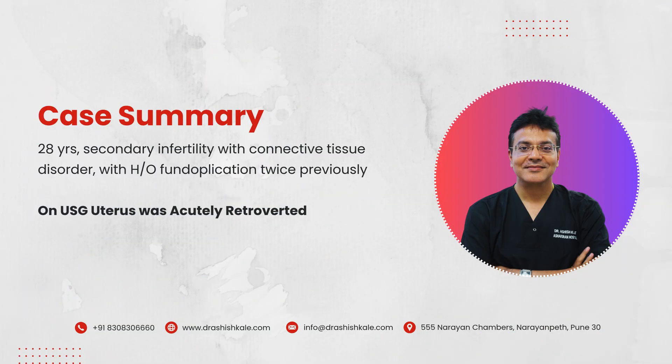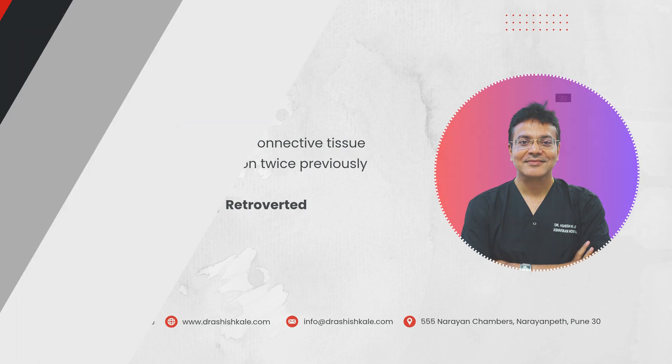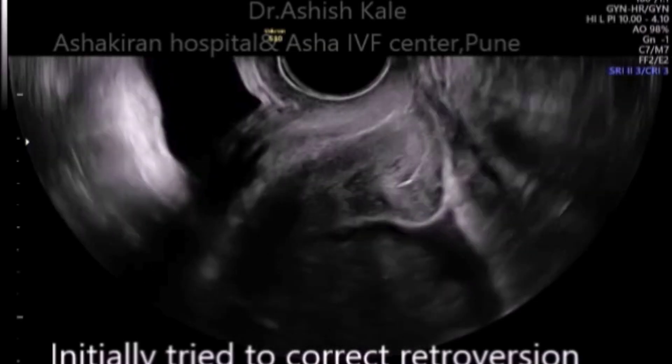Hello friends, today we are going to talk about the case of a 28-year-old with secondary infertility. If you see this image, she has two parallel lines of the cervix and the uterine cavity.